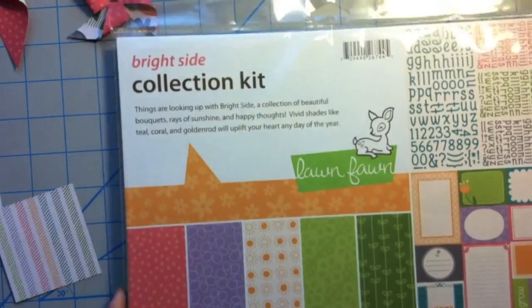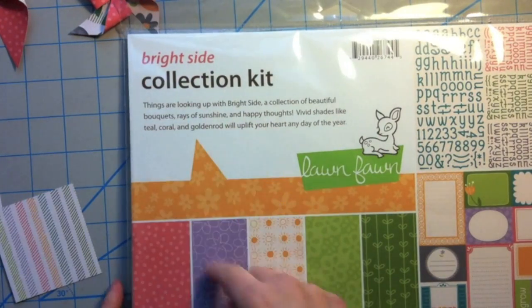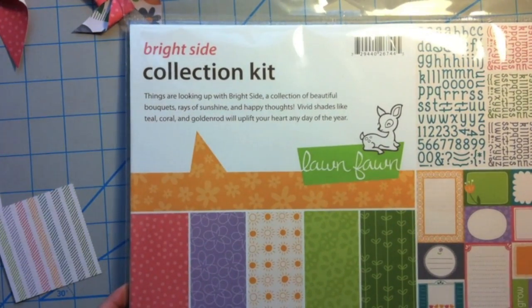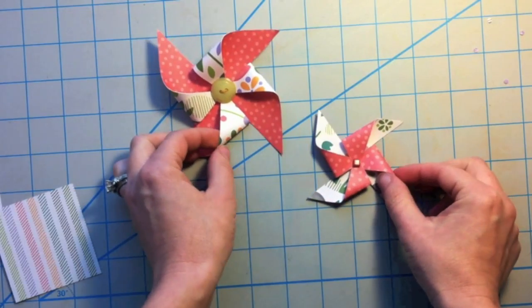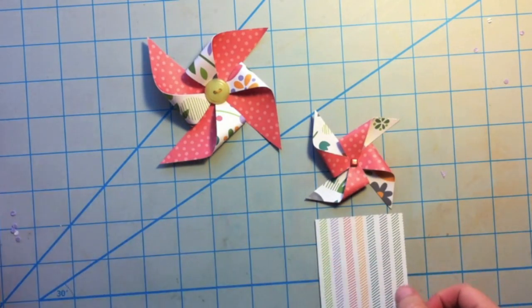My good friend Shari Moss is the one that showed me how to make these paper pinwheels. I'm going to be using the Lawn Fawn Bright Side Collection Kit. It's their new paper line and it's important that you use double sided paper for pinwheels because obviously both sides are going to be showing through.